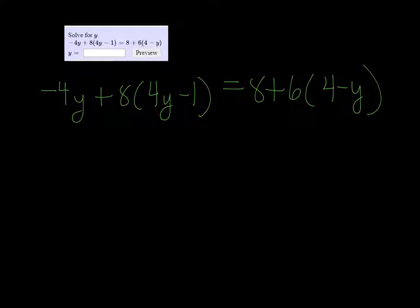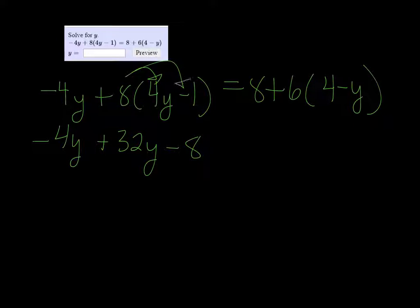We need to do some distributing here. So we get -4y + 32y - 8, distributing the 8 through. And now we have to distribute the 6 through, so we get 8 + 24 - 6y.